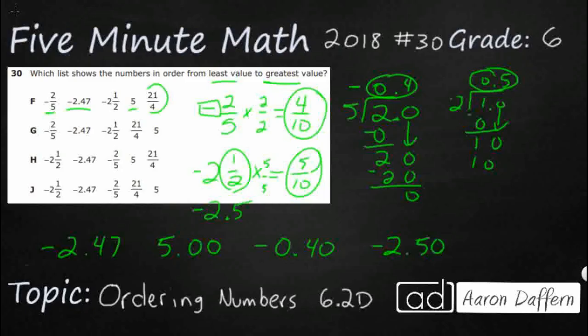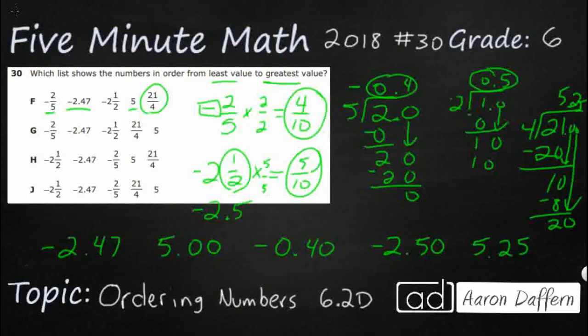And then lastly, we've got our twenty-one-fourths that we've got to deal with. And so we're just going to do long division on that one. But we've got a remainder of 1, so let's bring our 0 down. I'm kind of running out of room, but we'll make it work. 4 goes into 10 twice. So that's going to be 8, and we're going to bring down another 0, and that's going to be 5. So I'm kind of squished over there, but we'll make it look like 5.25, and that's a positive.